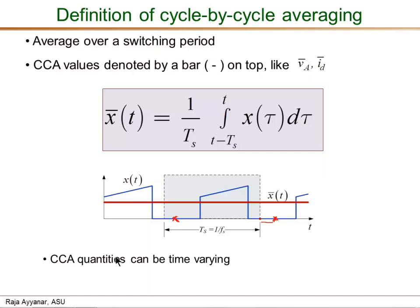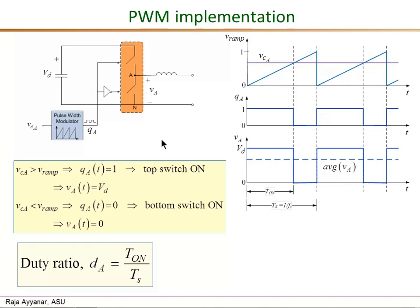Note that CCA values, even though they are average values given by this integral, can be time-varying. In fact, they are time-varying in DC-AC or AC-DC converters, and even in DC-DC converters they can be time-varying during transient conditions. In this example, x-bar(t) is a constant DC value because the waveforms repeat exactly from cycle to cycle. However, if the inductor current magnitude changes or the on-duration changes, the CCA value will no longer be constant but will be a rising or falling waveform following the average of the blue waveform.